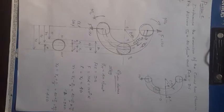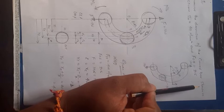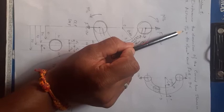Jai Shri Gurudev. Our next problem is problem number 5: determine the dimensions of the curved bar as shown in the figure. Assume sigma yt. Yield strength is given as 400 Newton per mm square and factor of safety 3.5.